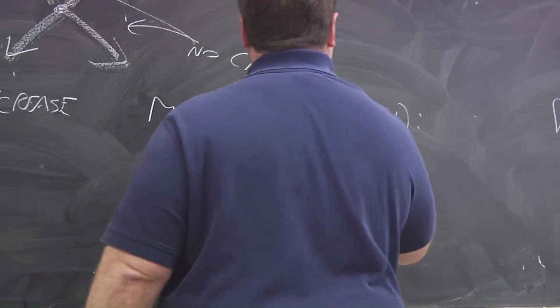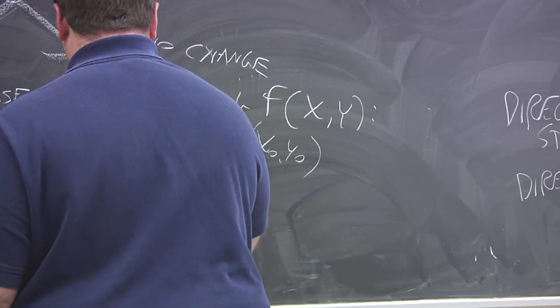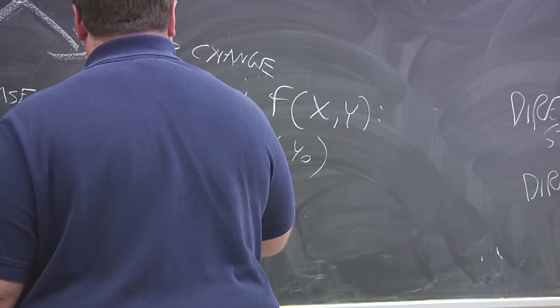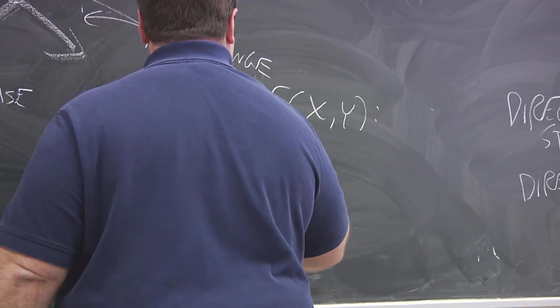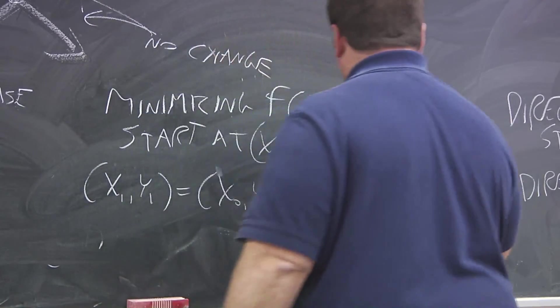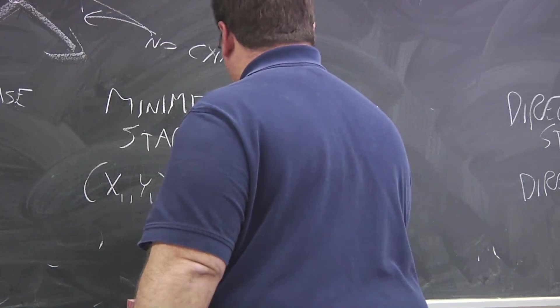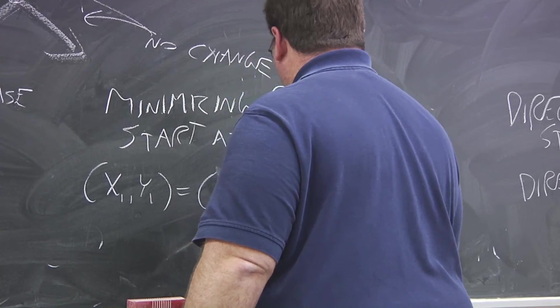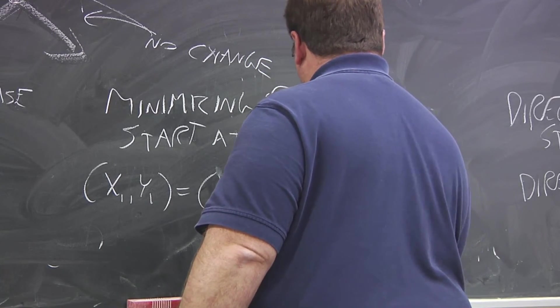So, you start at x naught, y naught, and then you set your new guess, x1, y1, to be your starting point plus a constant, which I'll call alpha, times a vector p, where p is the direction of steepest descent, so it's minus the gradient at that point over its magnitude.